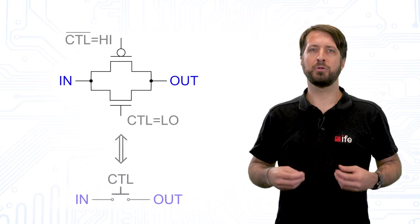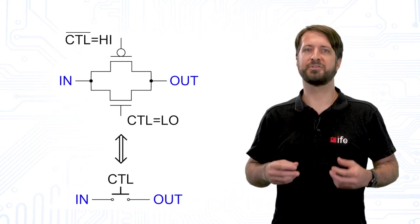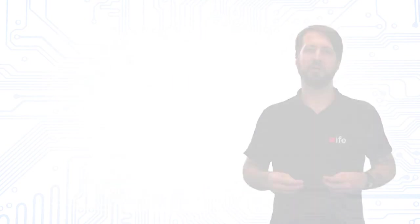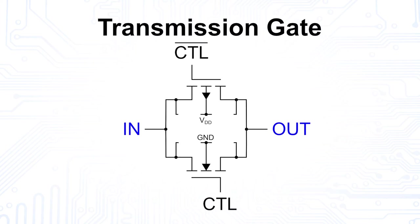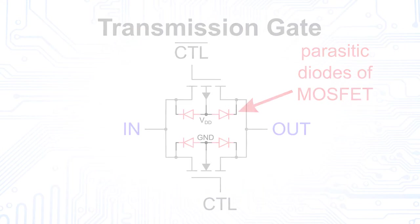Now the output will always float, regardless of what signal is applied to the circuit's input. Since the bulk terminal of the NMOS is permanently connected to ground, its parasitic diodes are always operated in reverse direction. The same is true for the PMOS and its bulk connection, which is permanently connected to the supply voltage. As a result, the transmission gate can be used in both directions.